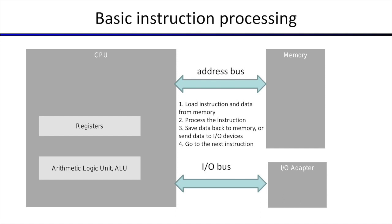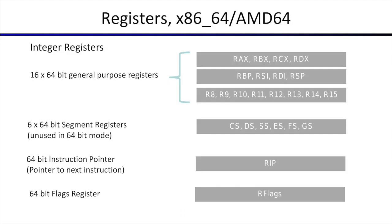Having this base model, let us now understand how the Intel x86 architecture is defined. For programming, the biggest construct you have is the registers, and then we will get to the instructions. In the x86 64-bit architecture, we have 16 64-bit general purpose registers. These are general purpose registers because you have quite a bit of discretion in deciding how you want to use them.